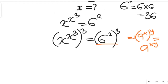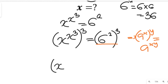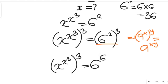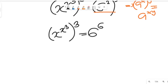Applying that law, the left side simplifies to x to the power of x-cubed, all to the power of 3. On the right side, the exponents multiply to give us 6 to the power of 6. Having done that, the next thing we will think of doing is applying another law of indices.